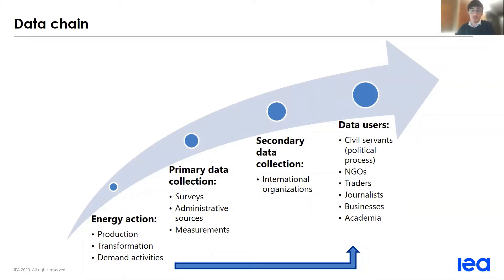What happens is that you have a physical reality: some fossil fuel is being produced, or you try to convert an energy form into another one. This translates into information which is collected at the primary level by countries — measured through surveys or another source of data. The country does the aggregation and then communicates it to the secondary data collection framework, which are international organizations. The IEA is one of them. There is then work done in terms of aggregation and validation of the data.